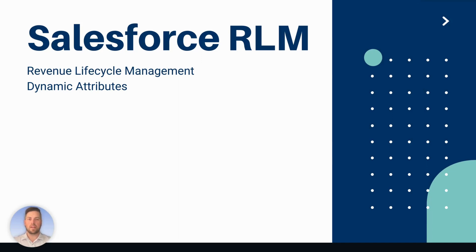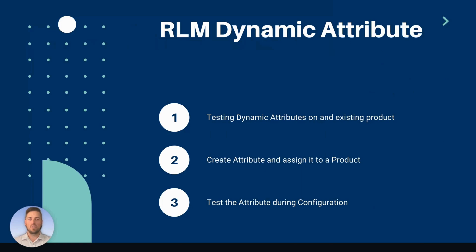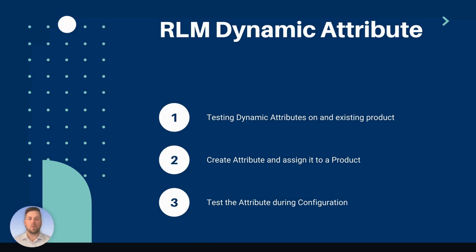Hello everyone! Today we're going to talk about dynamic attributes in Salesforce Revenue Lifecycle Management. First we're going to review an existing attribute on a bundle on an existing quote. We're going to see how attribute-based adjustments affect pricing based on the selected value. Then we're going to create a new dynamic attribute on another product, set it up so it affects pricing based on which value is selected, and finally we're going to test out our new attribute.